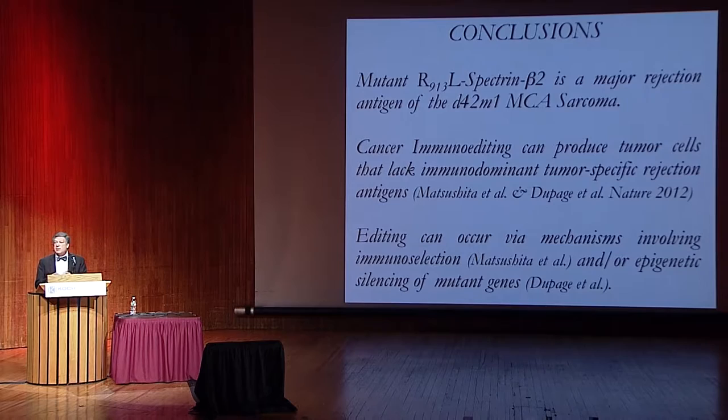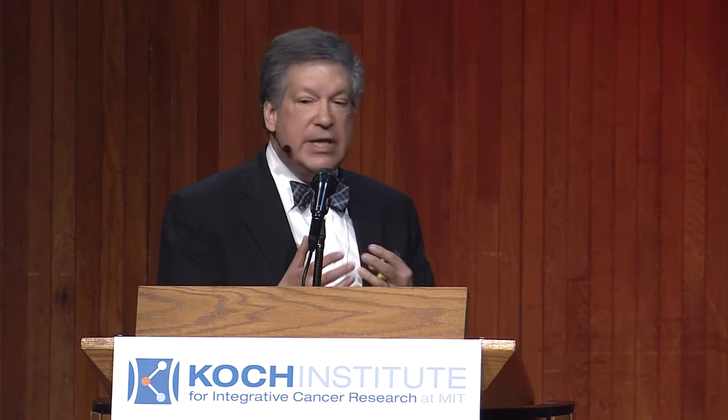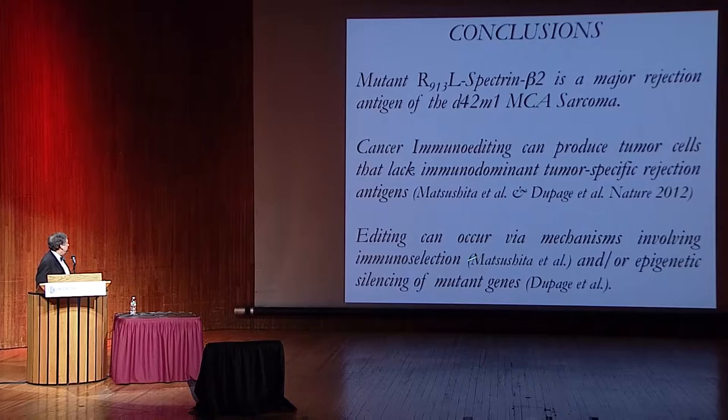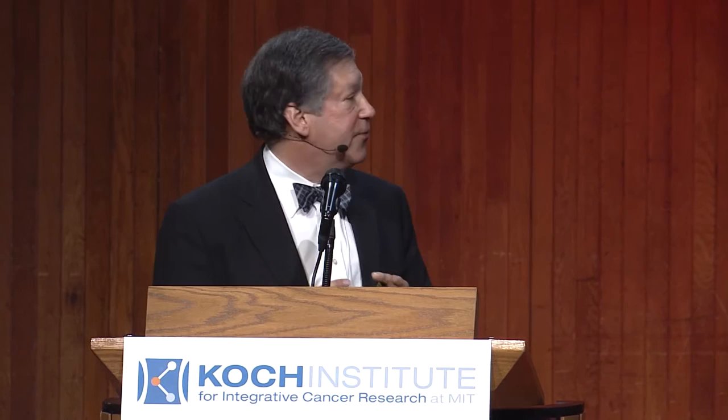The system using methylcholanthrene-induced sarcomas paired beautifully with an independent study done by Michael Depage and Tyler Jacks, such that the papers were published together — perhaps the first time a tumor biologist and an immunologist agreed upon the same things. In addition, the two systems yielded more information about the mechanisms underlying immunoediting, showing that it can occur either via an immunoselection mechanism or through epigenetic silencing of the mutant genes. This really sets, for the first time, a biochemical genetic understanding of what cancer immunoediting is.